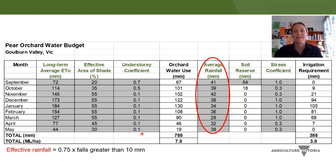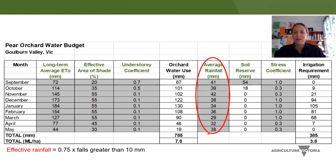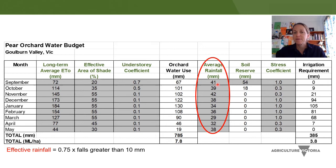Now we'll move on to the columns that adjust orchard water use back to irrigation requirement. The rainfall column again uses long-term average values for Tatura. Not all rainfall is considered effective — a general rule is that an event has to be greater than 10 mm to be considered effective, and even then we only consider 75% of those falls to be effective. The spreadsheet calculates 75% of whatever's entered, so you don't have to calculate effective rainfall yourself. But if you're entering your own data, you'd only be adding up rainfall events greater than 10 mm.